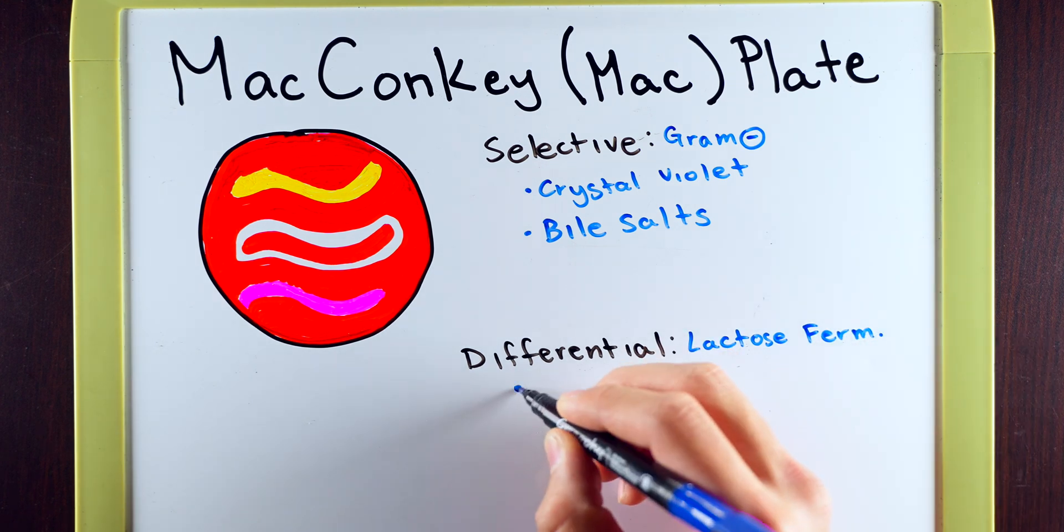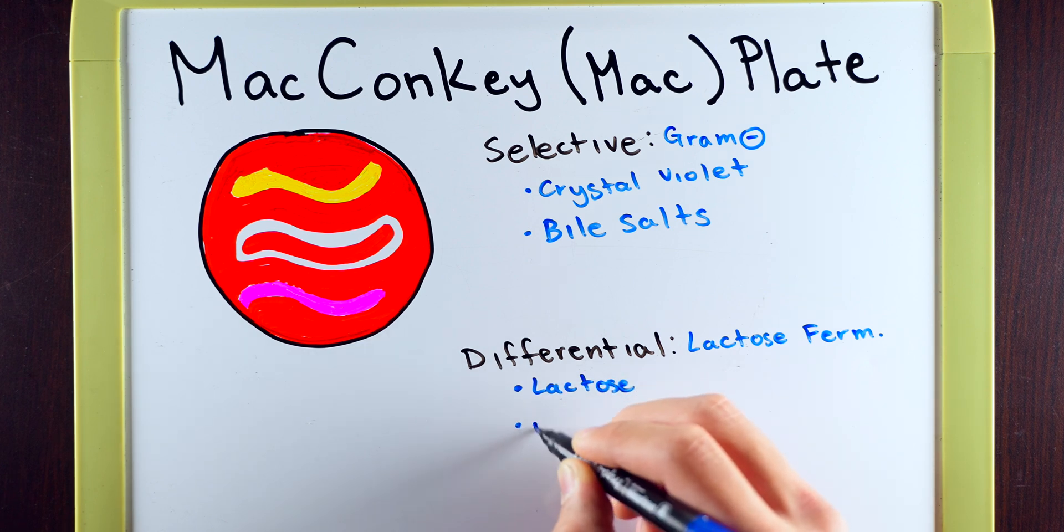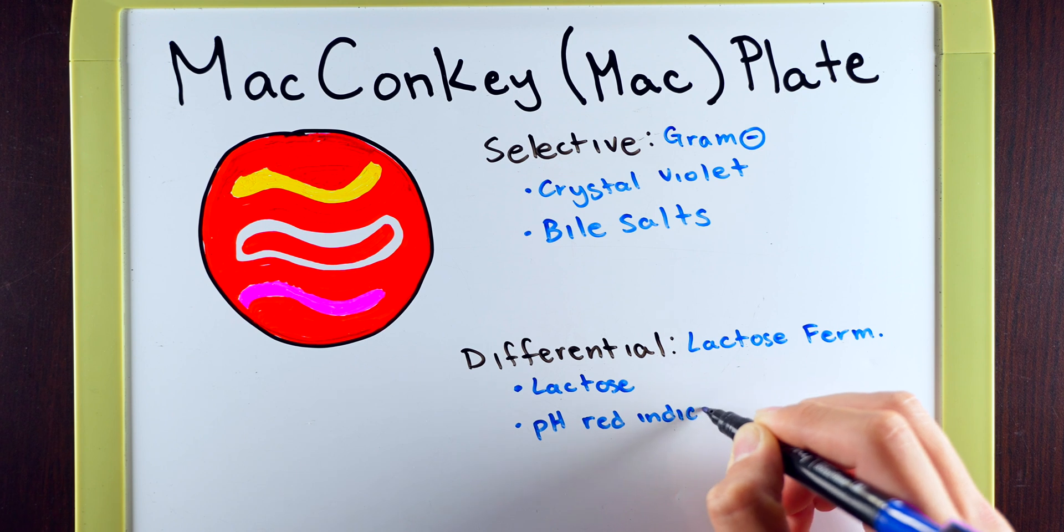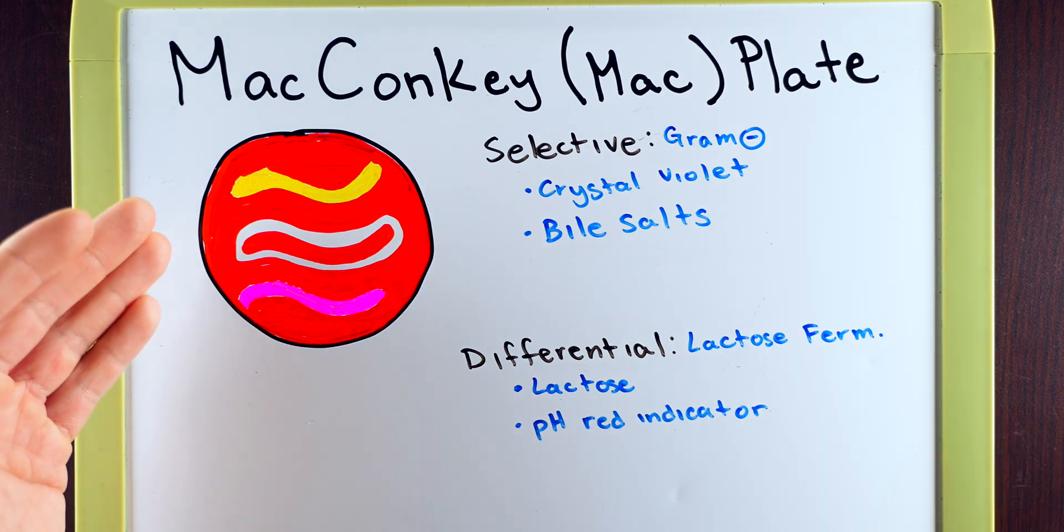And the way that we're going to know this is because we included lactose, which is what the bacteria would take up if it is a lactose fermenter, but also pH red indicator. And this is exactly why we have this red color on the plate.